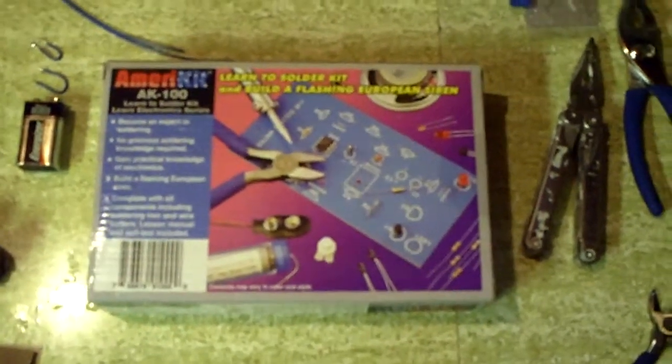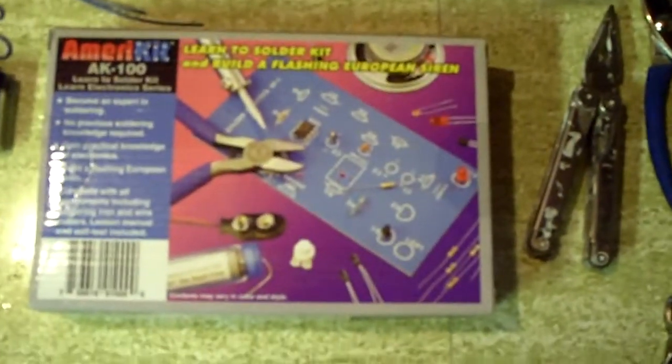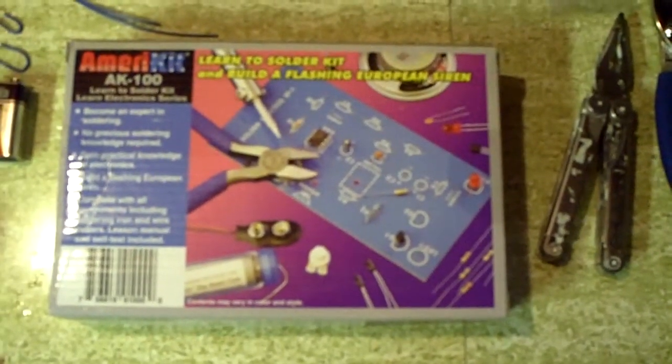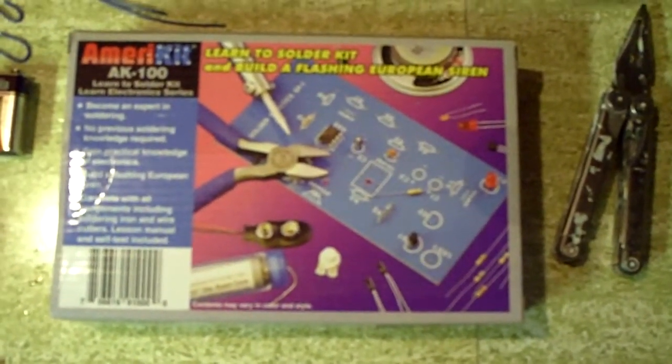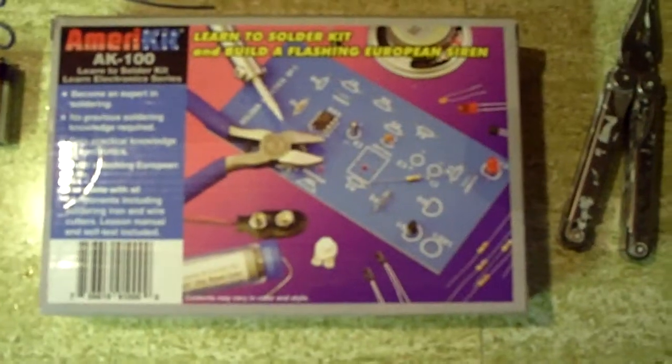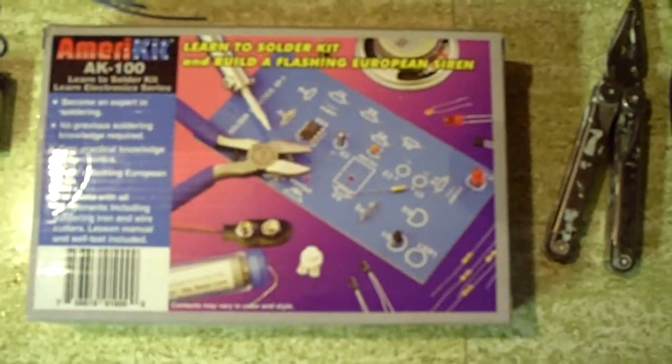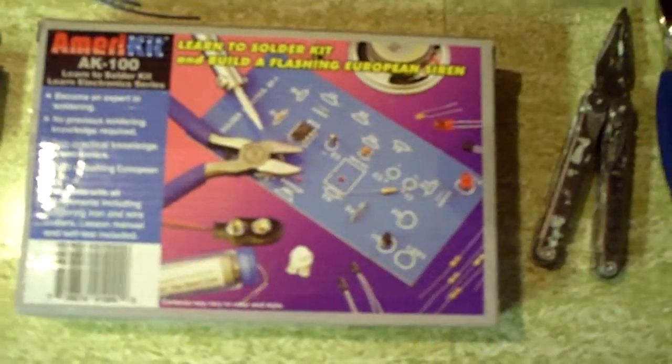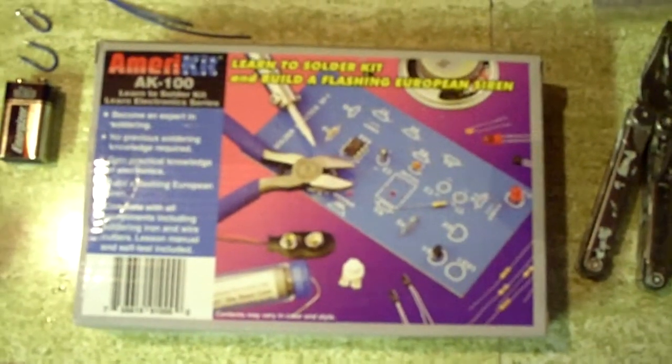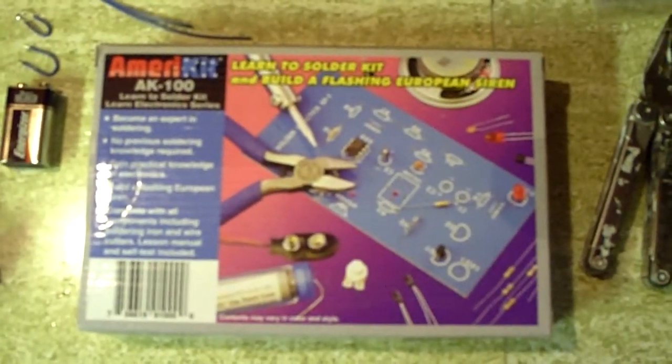Ok, so as I mentioned before, I've been working on this Learn to Solder Kit, which for me is a new thing. This is the AmeriKit AK100 Learn to Solder Kit and Build a Flashing European Siren. This is the kit I picked up at the HMS Beagle store in Parkville for around $15, so it was a pretty good kit.